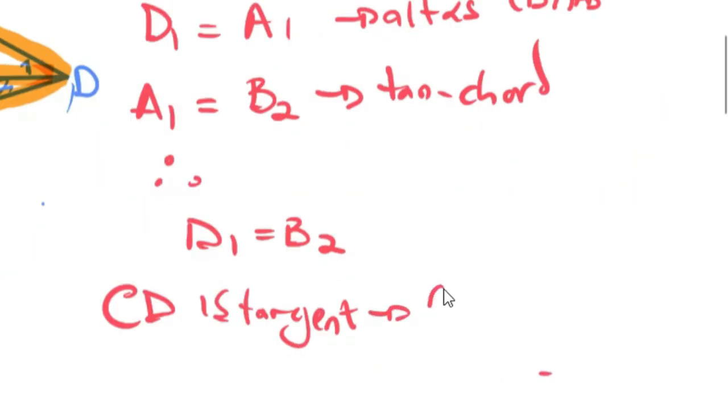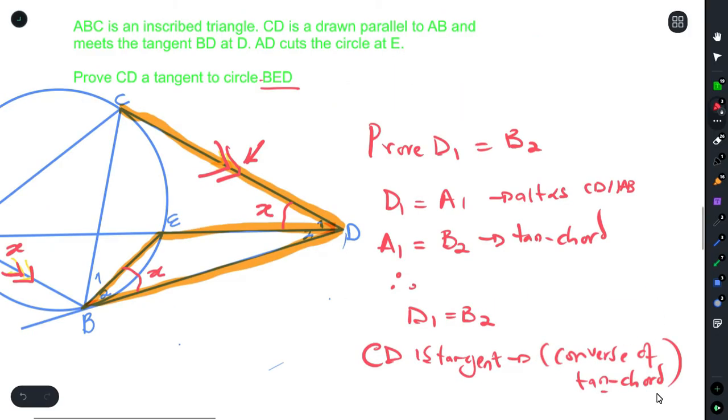And the reason for that is it's a converse of tan chord. And this is how you prove that a line is a tangent.